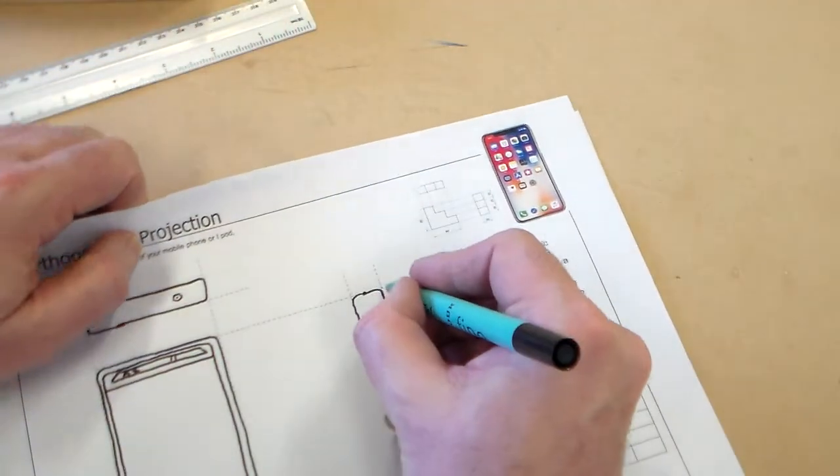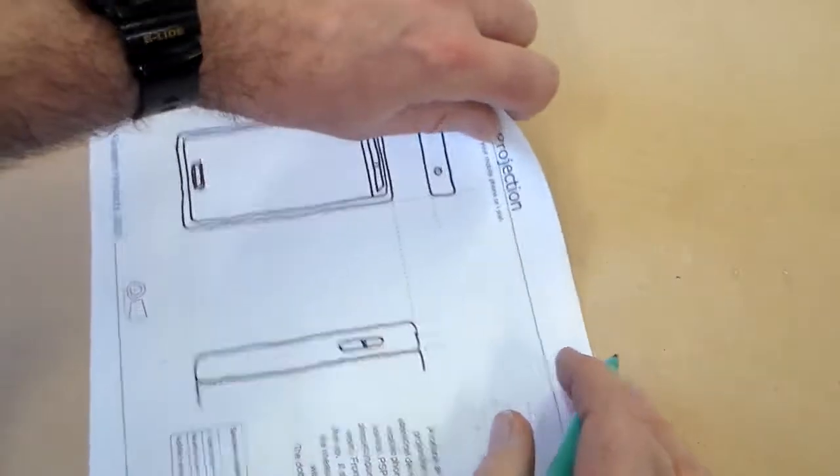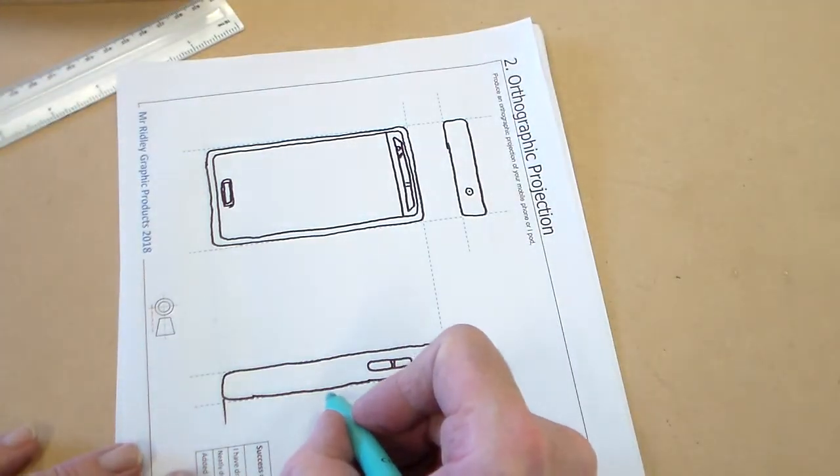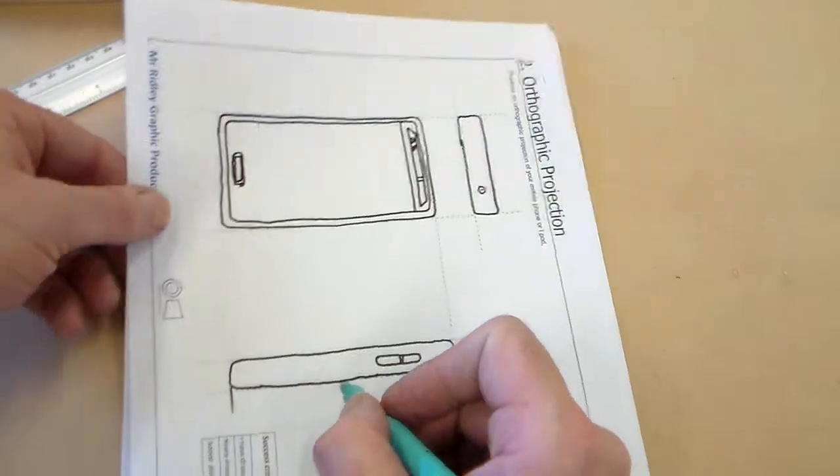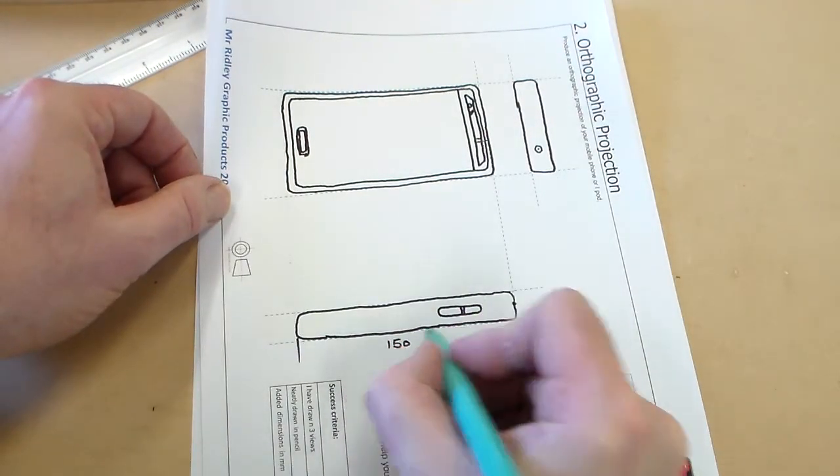So for the dimensions, again, it should be a fine line. I've measured my phone earlier, and it's 150.